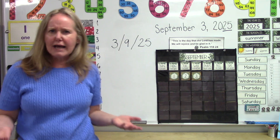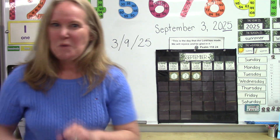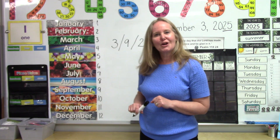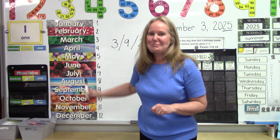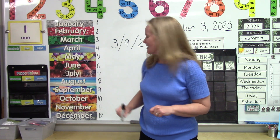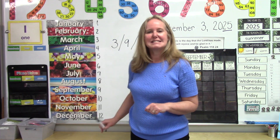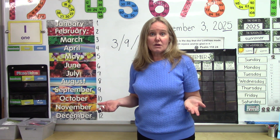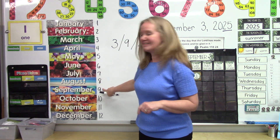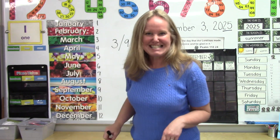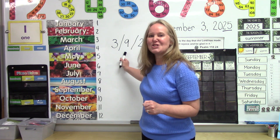But why would I use a nine for the month of September? Let's look at our months of the year: January, February, March, April, May, June, July, August, September, October, November, December. We have 12 months of the year. If we numbered them one through 12, the month of September is number nine. So when writing the month, I just used the number nine.